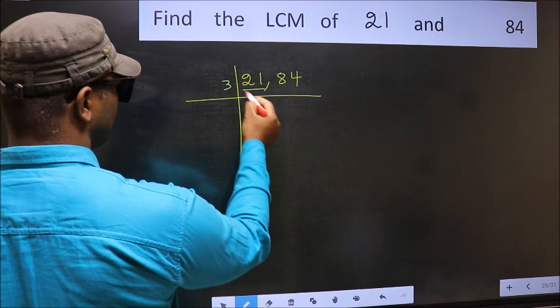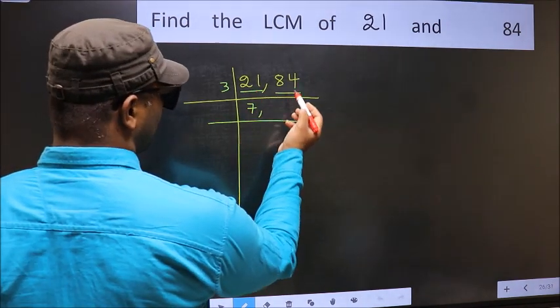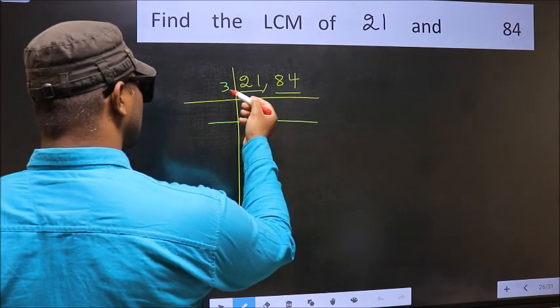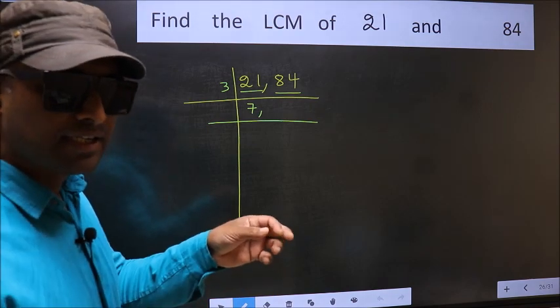21 is 3 times 7 equals 21. Now the other number 84. To check whether 84 is divisible by 3 or not, for that add the digits.